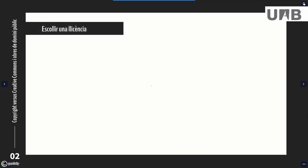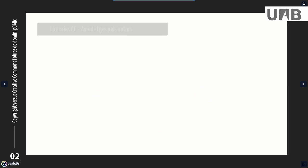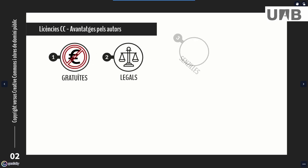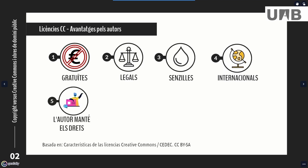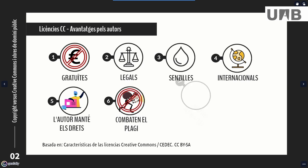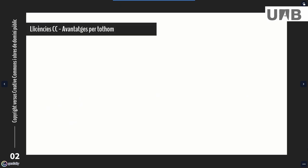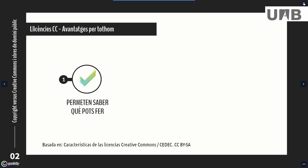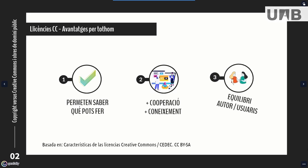Your work is yours and you can put whatever license you want on it, and you can also draft an ad hoc license. But choosing a Creative Commons license has many advantages. They are free, legal, easy to understand and obtain, and are an internationally recognized standard. They allow you to maintain copyright. They fight plagiarism. They provide more dissemination and visibility to your works. They allow you to decide the conditions under which you want others to use your work. There are also benefits for everyone: they let you know what you can do with someone else's work, they increase cooperation and dissemination of knowledge, and they are a balance between the rights of authors and users.